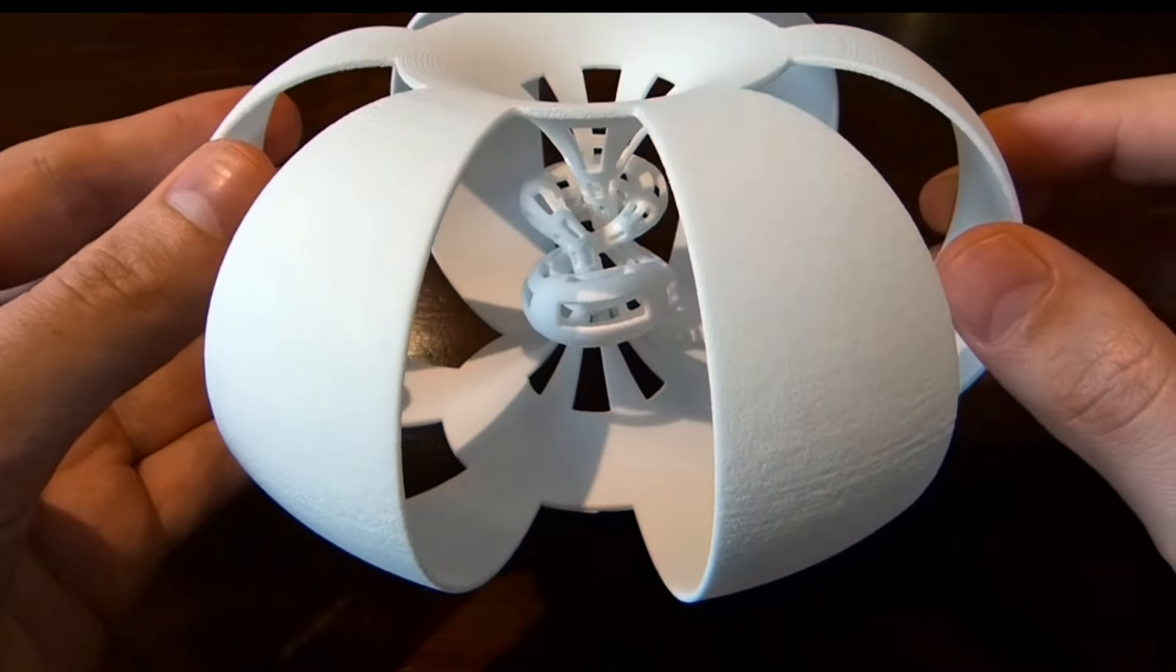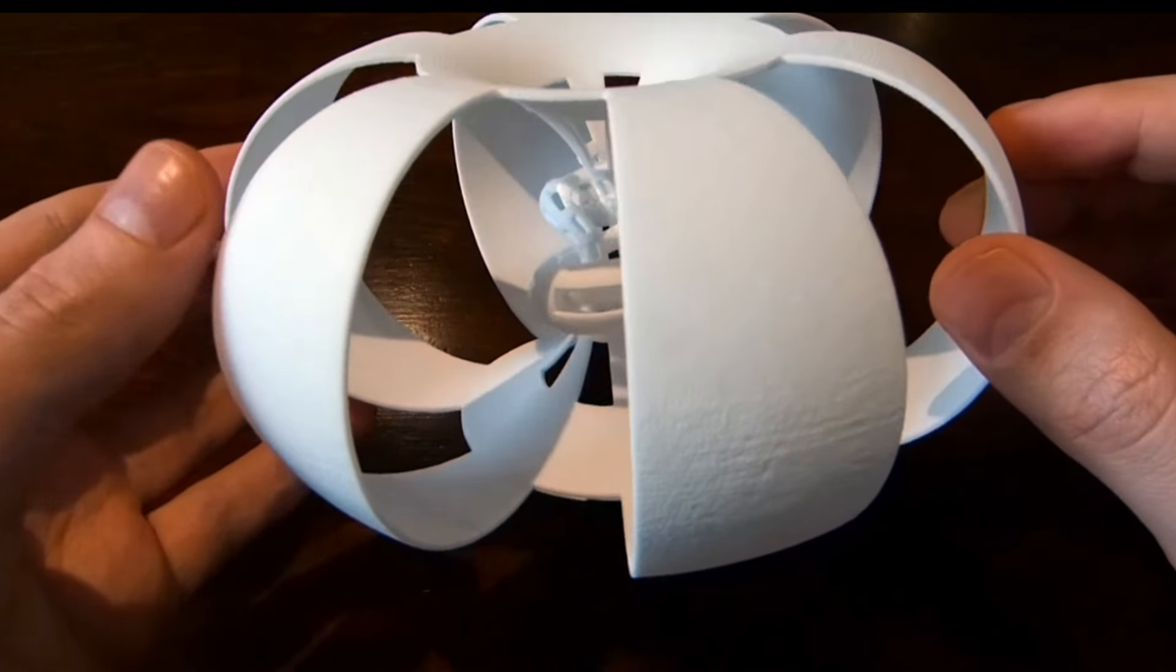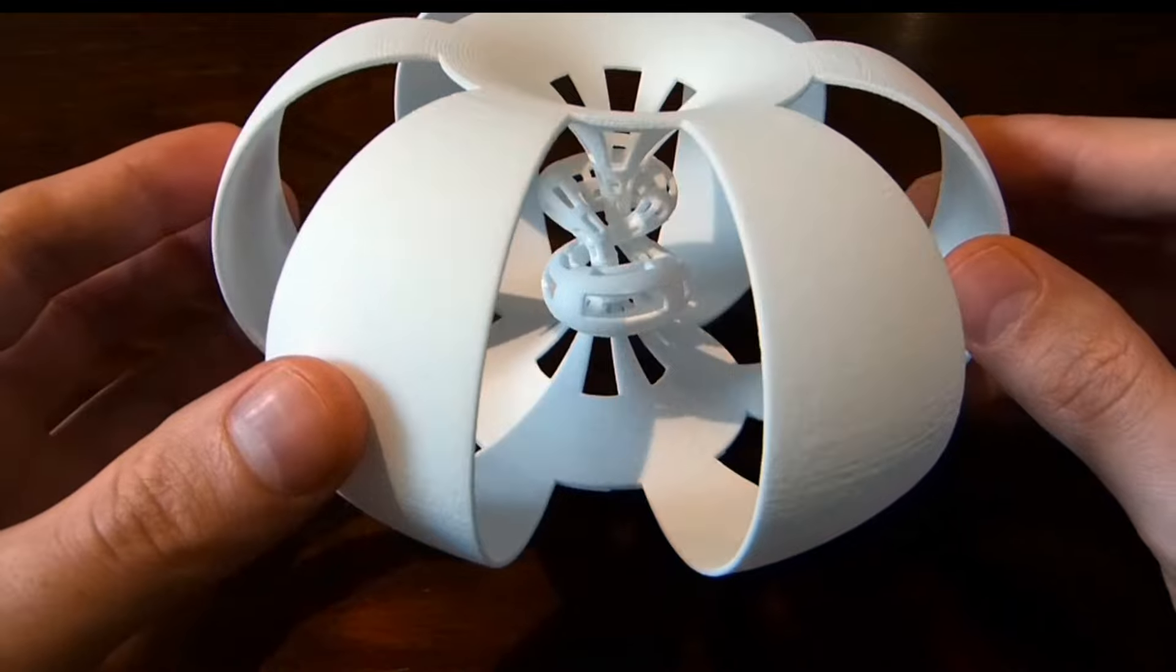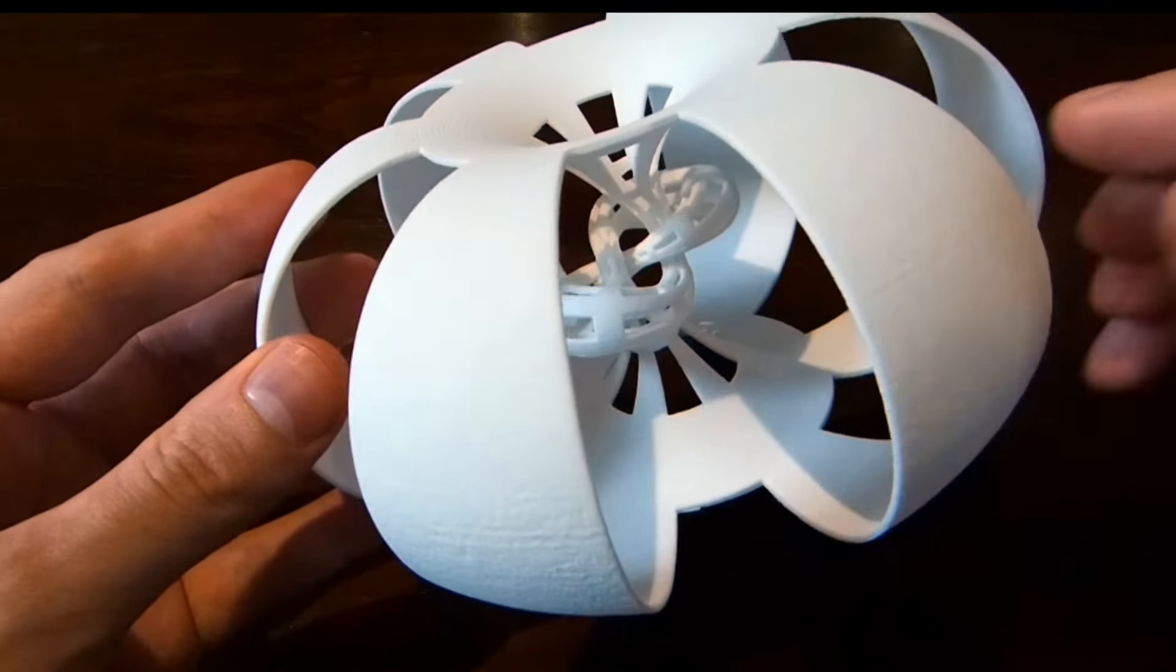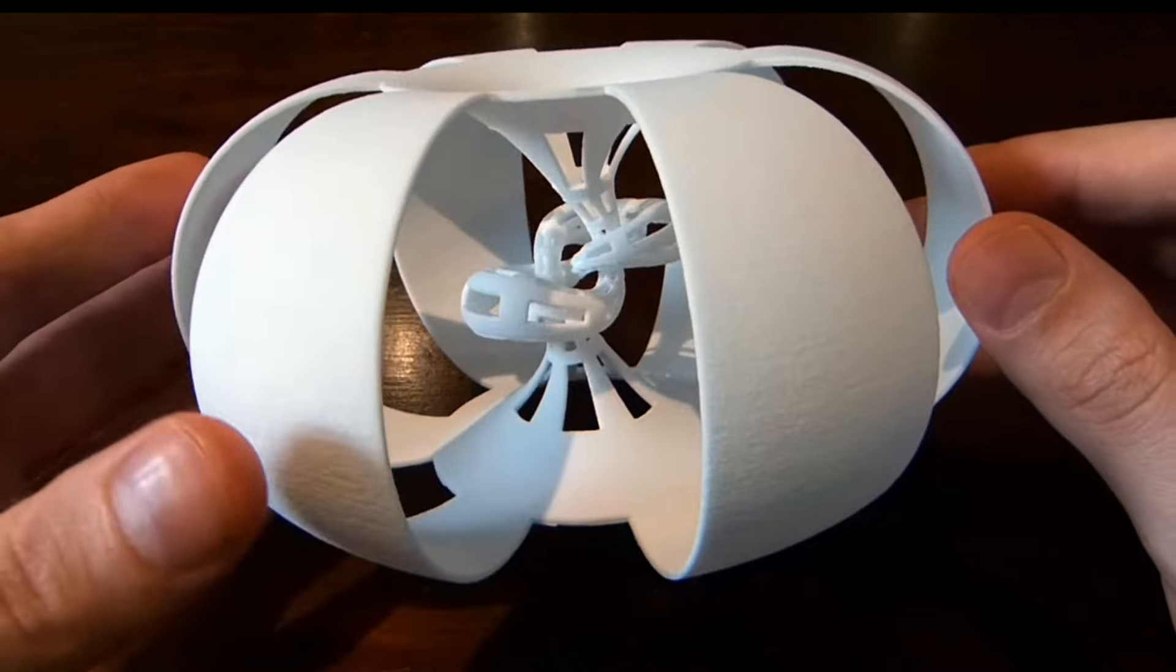So one of the most interesting things about the figure eight knot complement is that its complement is actually a hyperbolic manifold. And it's one of the simplest examples of hyperbolic manifolds.